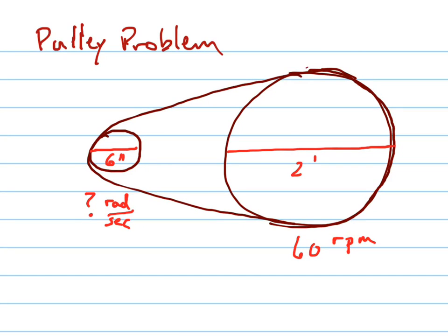Here's a classic pulley problem. We have a pulley with two wheels. The bigger wheel has a diameter of two feet right here. The smaller wheel has a diameter of six inches.